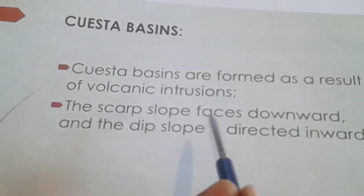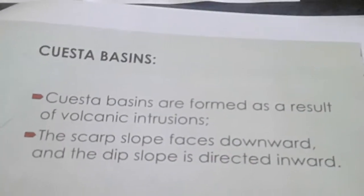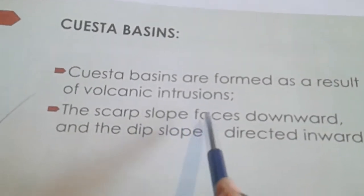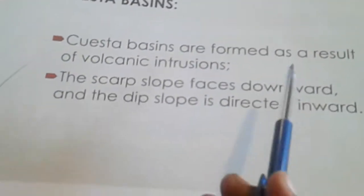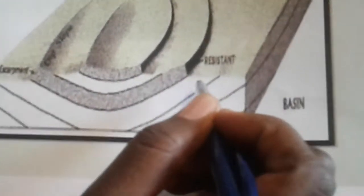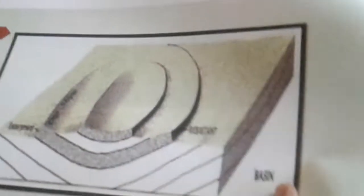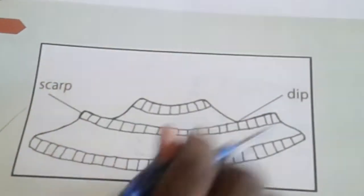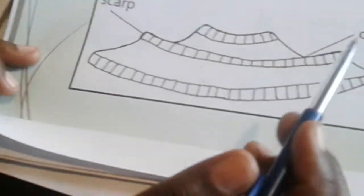We also have cuesta basins and cuesta domes. Cuesta basins are formed as a result of volcanic intrusions. With a cuesta basin, the scarp slope faces downward and the dip slope — the gentler slope — is directed inward. The scarp slope is outward. This is how you need to identify it in your examinations, as shown in the diagram.